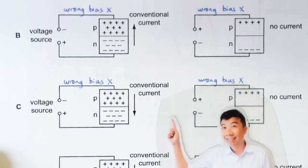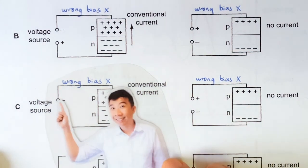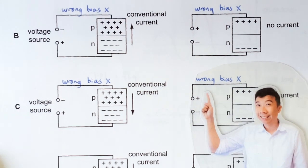Option C is also wrong because of the wrong bias. Okay, that's all I have to say. Ta-ta!